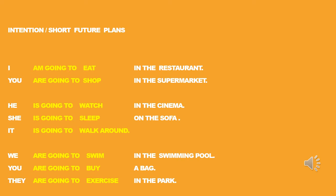More examples about the intention of short future plans using 'be going to': I'm going to eat in the restaurant. You are going to shop in the supermarket. He is going to watch in the cinema. She is going to sleep on the sofa. It is going to walk around. We are going to swim in the swimming pool. You are going to buy a bag. They are going to exercise in the park.